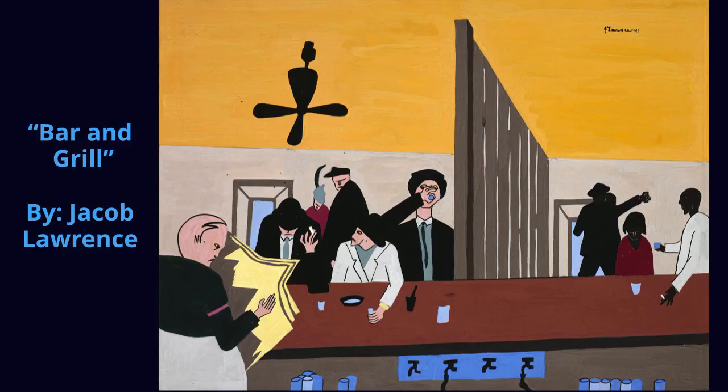Artist Jacob Lawrence created a painting called 'Bar and Grill.' Lawrence experienced the reality of Jim Crow segregation, involving the requirement that he ride in the back of city buses and live in a Black neighborhood. In this painting, his anger is depicted as it shows a cafe space being divided into two — one occupied by whites and the other by Blacks. This artwork emphasizes the two culturally separate worlds.